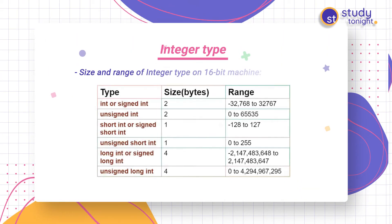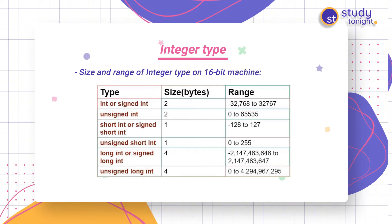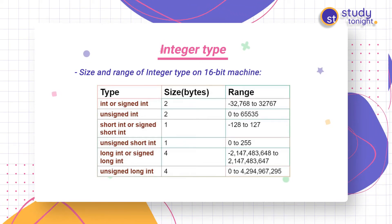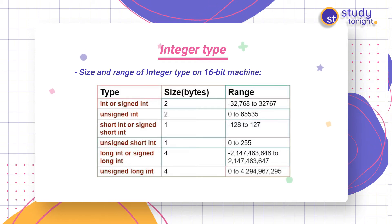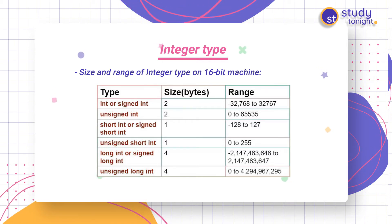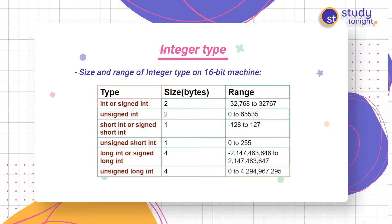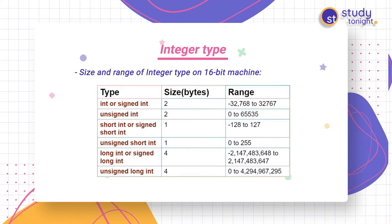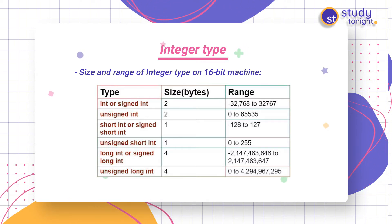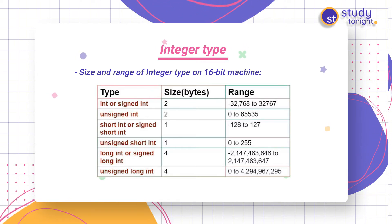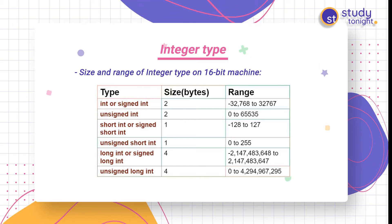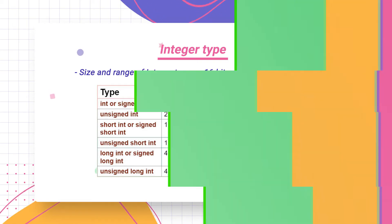The first type is the integer type. The range and size of integer type on 16-bit machines: int or signed int takes two bytes, unsigned int takes two bytes, short int takes one byte, unsigned short int takes one byte, long int or signed long int takes four bytes, and unsigned long int takes four bytes.